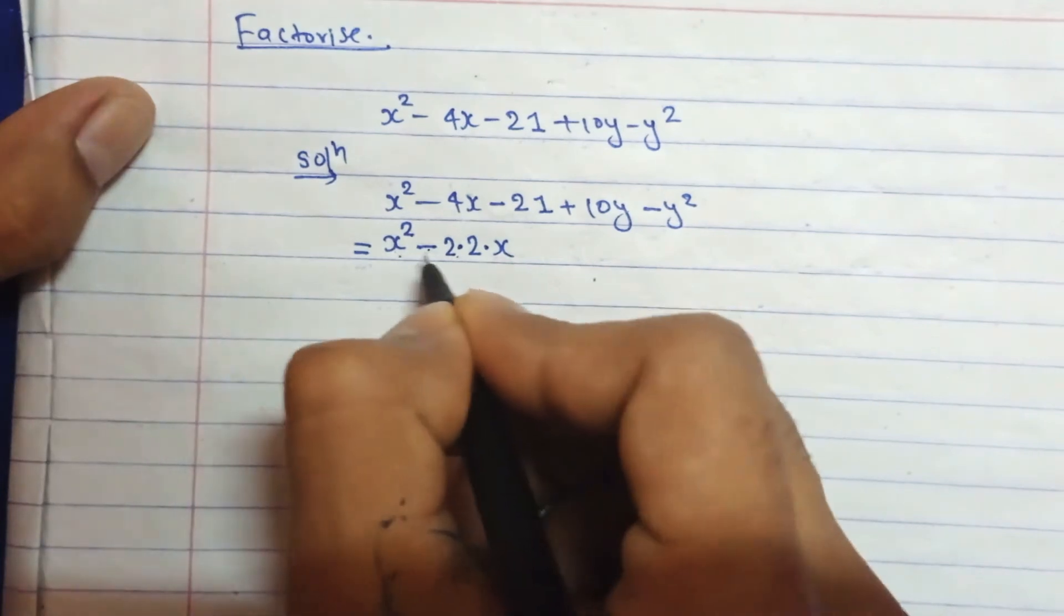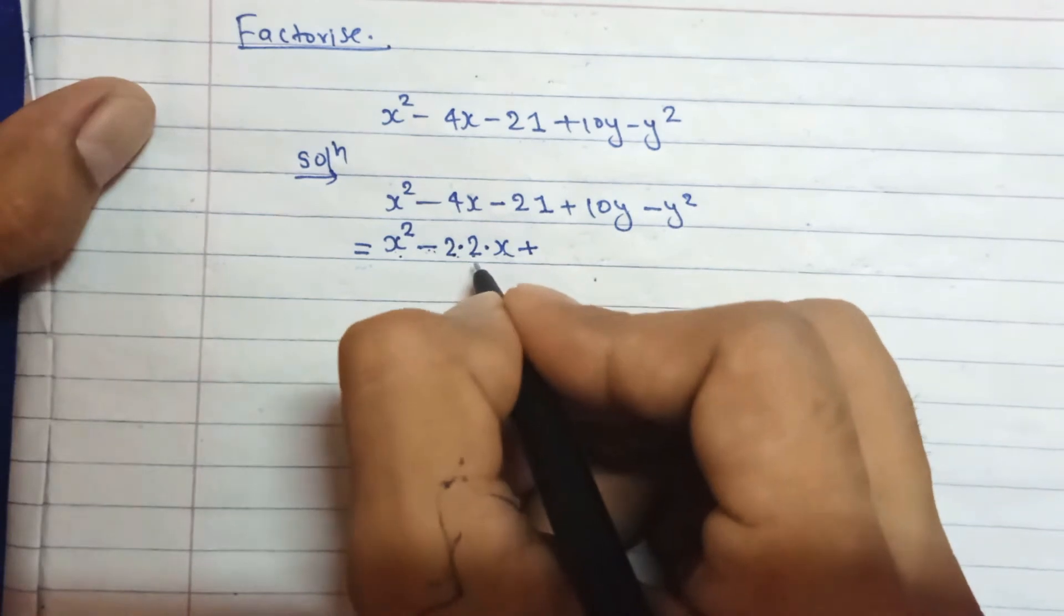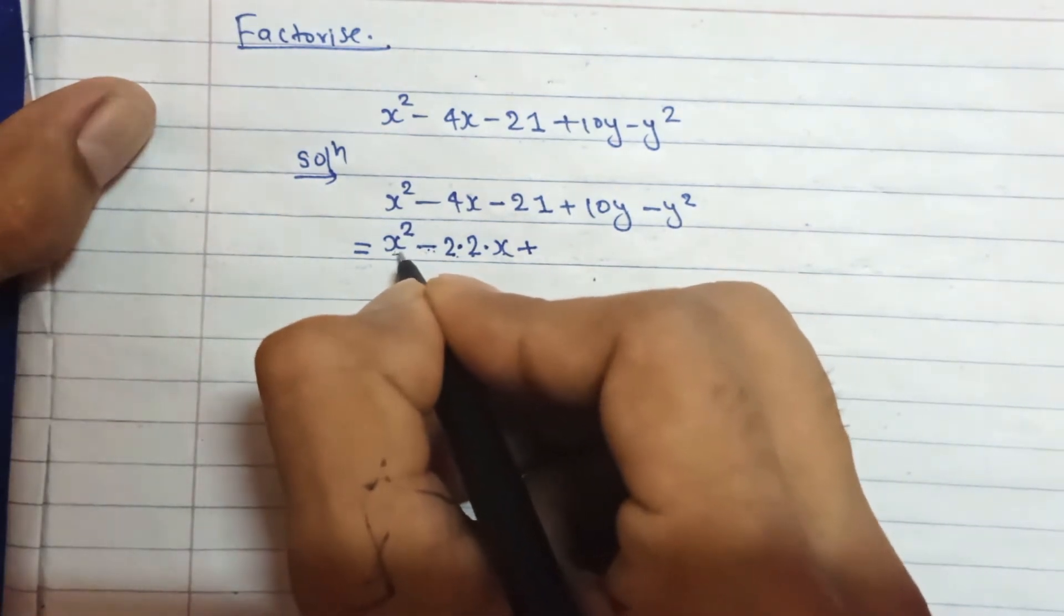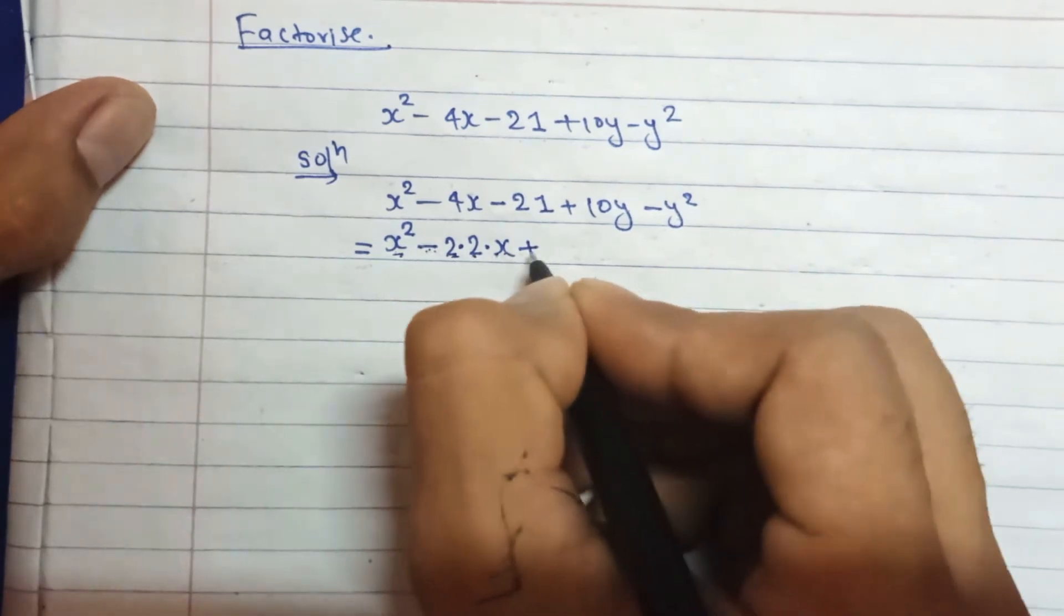Then we can write here b². In place of b, here we can see if x is a and this 2 is for the formula a² - 2ab, then b will be 2.